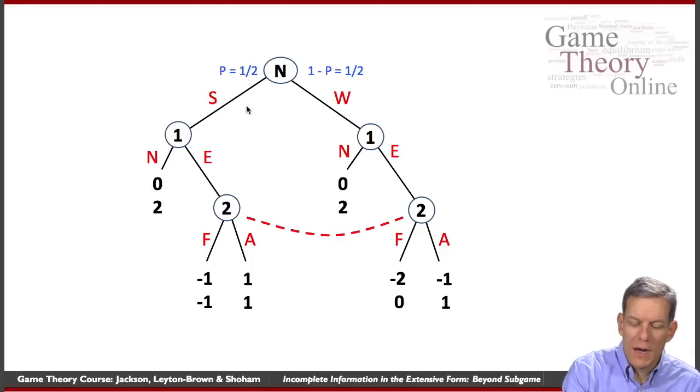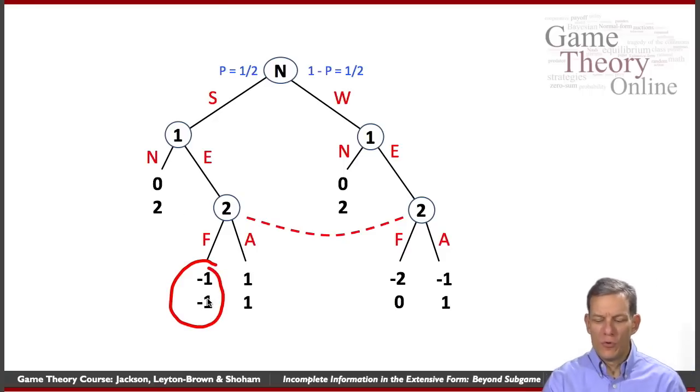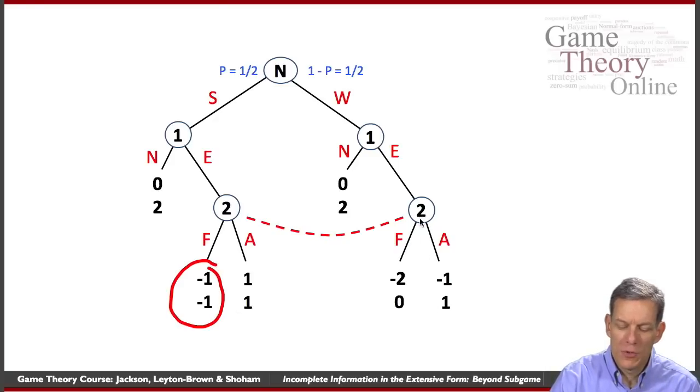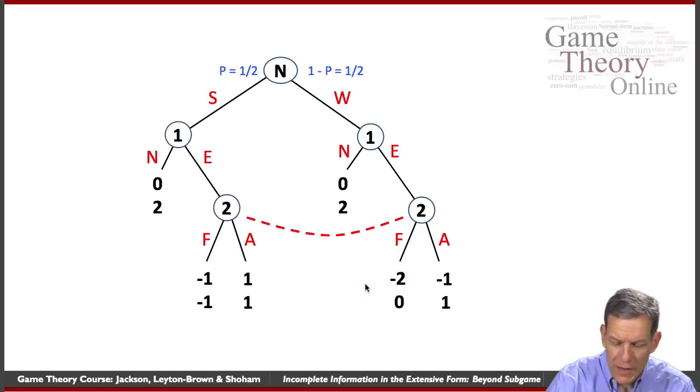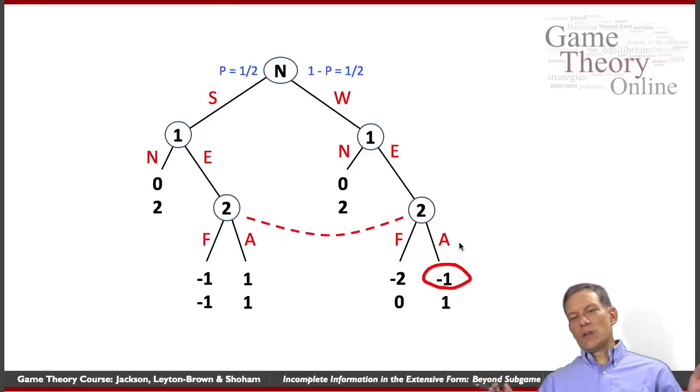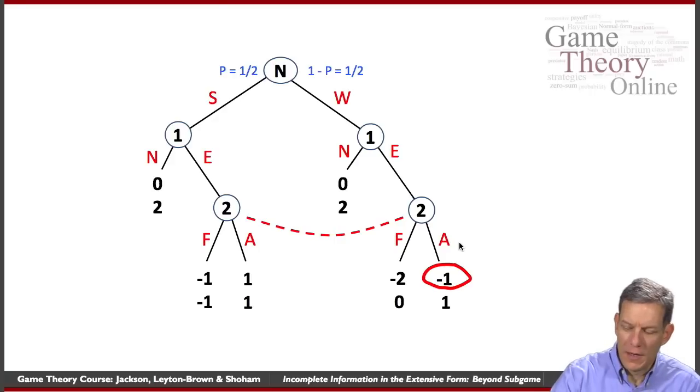And basically, where does strong and weak manifest itself in terms of payoffs? It manifests itself in terms of what happens if firm two fights. So if firm two fights a strong firm one, they both get minus one. So they both lose. If firm one is strong and firm two fights, that's going to be costly for both of them. If firm two fights a weak entrant, then firm two gets zero and firm one gets minus two. So weakness means that they do less well in fighting. We can also, in this particular game, have a situation here where firm one, the weak version of firm one, even if firm two is accommodating, is eventually going to go out of business. They've got really lousy coffee. They're not going to make it.